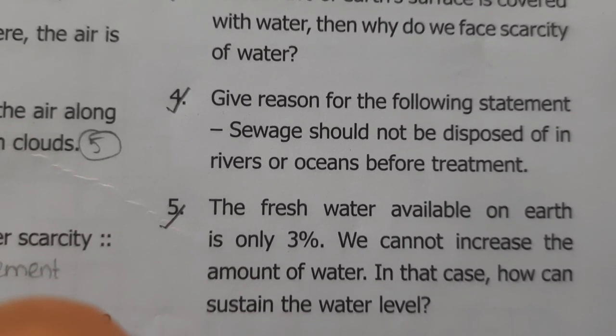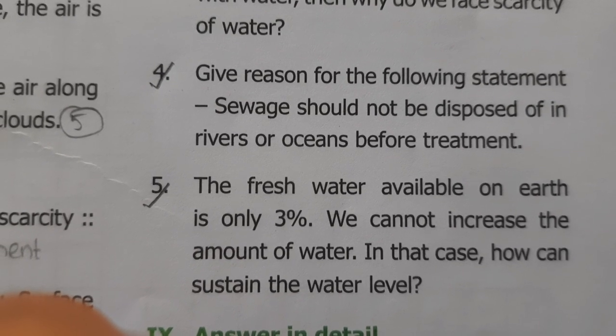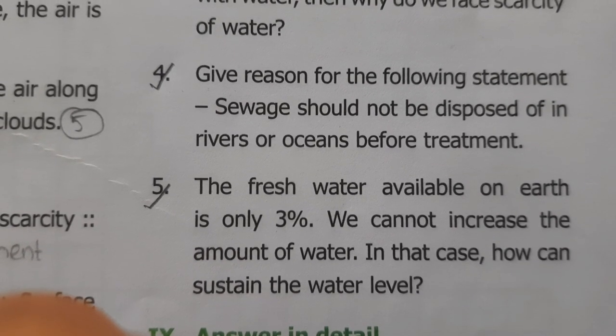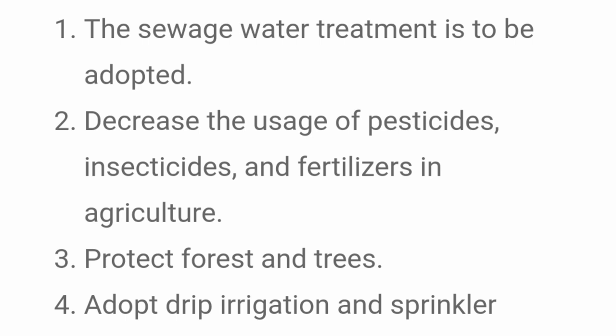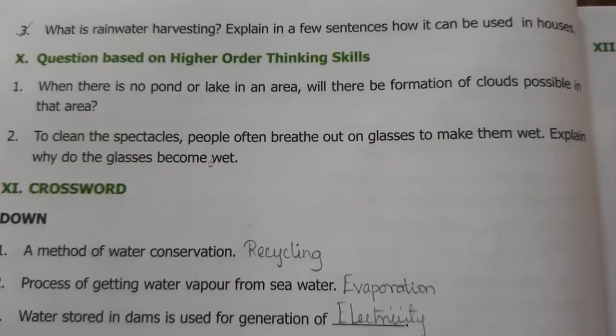Fresh water available on earth is only 3 percentage — we cannot increase the amount of water. How can we sustain the water level? Answer: adopt sewage water treatment, decrease usage of pesticides, insecticides, and fertilizers in agriculture, protect forests and trees, adopt drip irrigation and sprinkler irrigation, and implement rainwater harvesting in every building.